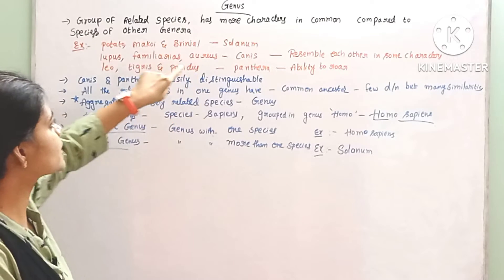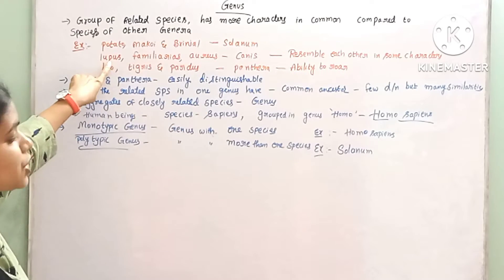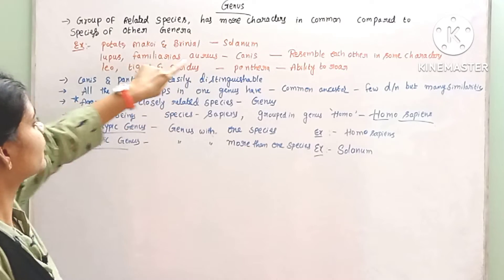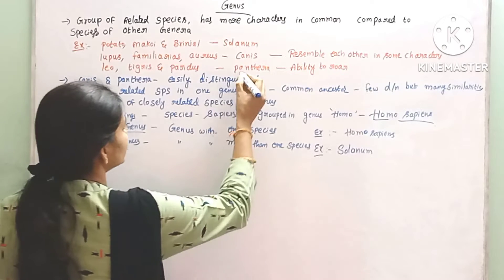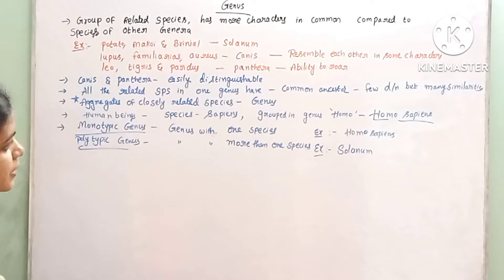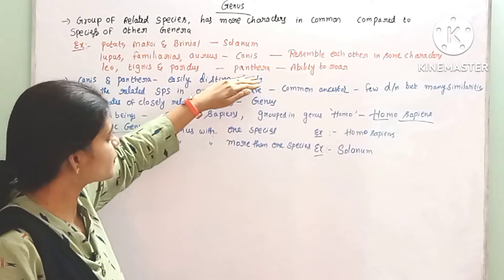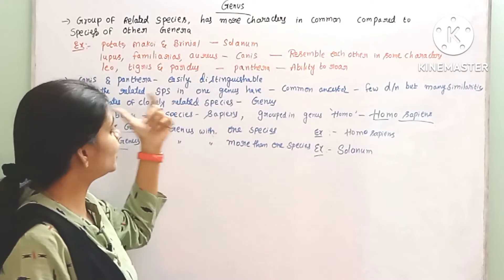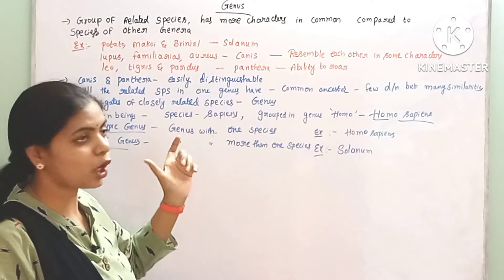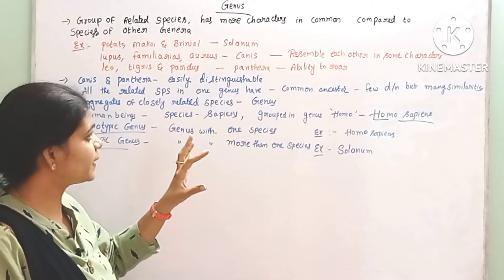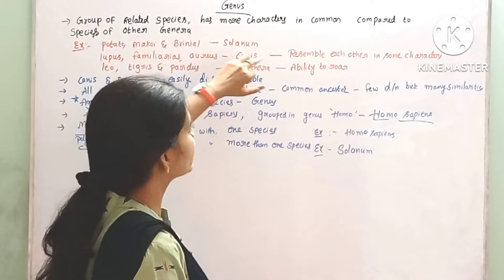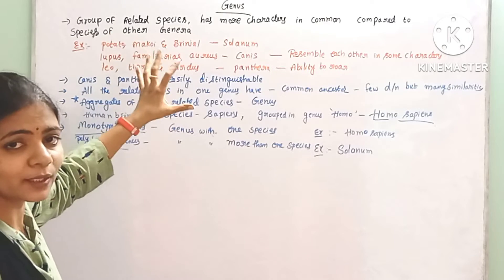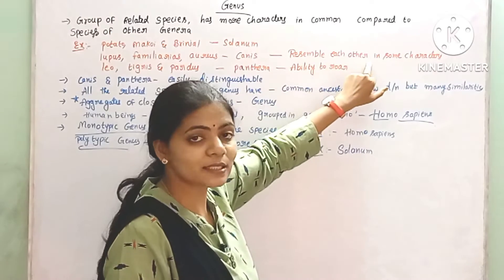The genus Canis has different species — Canis lupus, Canis familiaris, and others. There are also different species in Panthera. They have the common character of the ability to roar. The genus Canis includes dogs and fox — they resemble each other in some characters.